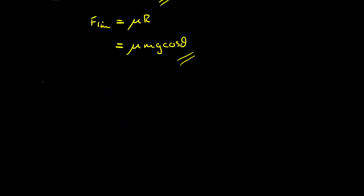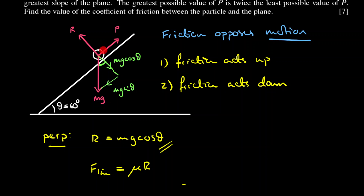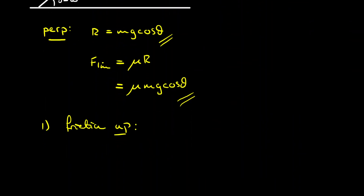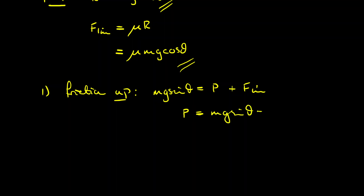Case one: friction is acting up, meaning the object is about to slide down the plane. The P force combined with the friction force equals the component of weight down the plane. So mg sin θ equals P plus the limiting friction. Rearranging: P equals mg sin θ minus the limiting friction, which is μ mg cos θ.